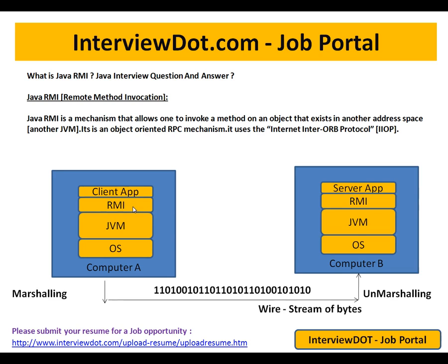Using the server IP address and the application port number — every application in an OS will have a port number — so using the server IP, the port number, and the service object name or class name, it will try to find out which computer it has to connect to.